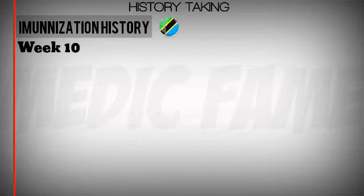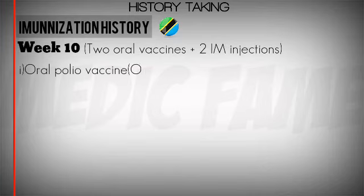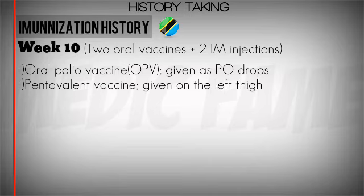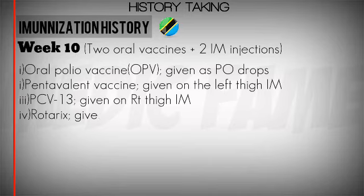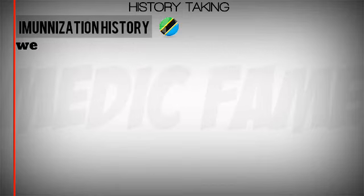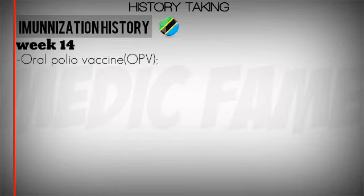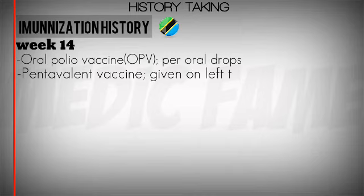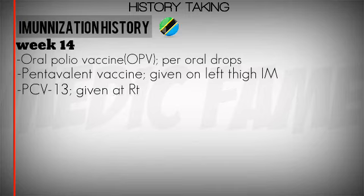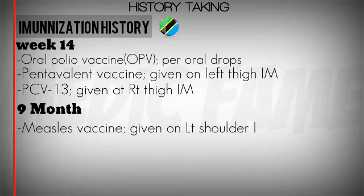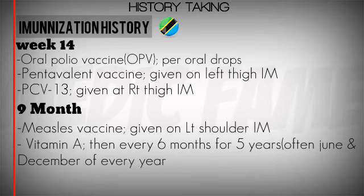At 14 weeks, we give oral polio vaccine, pentavalent vaccine on the left thigh intramuscularly, and PCV at the right thigh intramuscularly. At nine months, measles vaccine is given at the left shoulder intramuscularly, and vitamin A is also given at nine months.